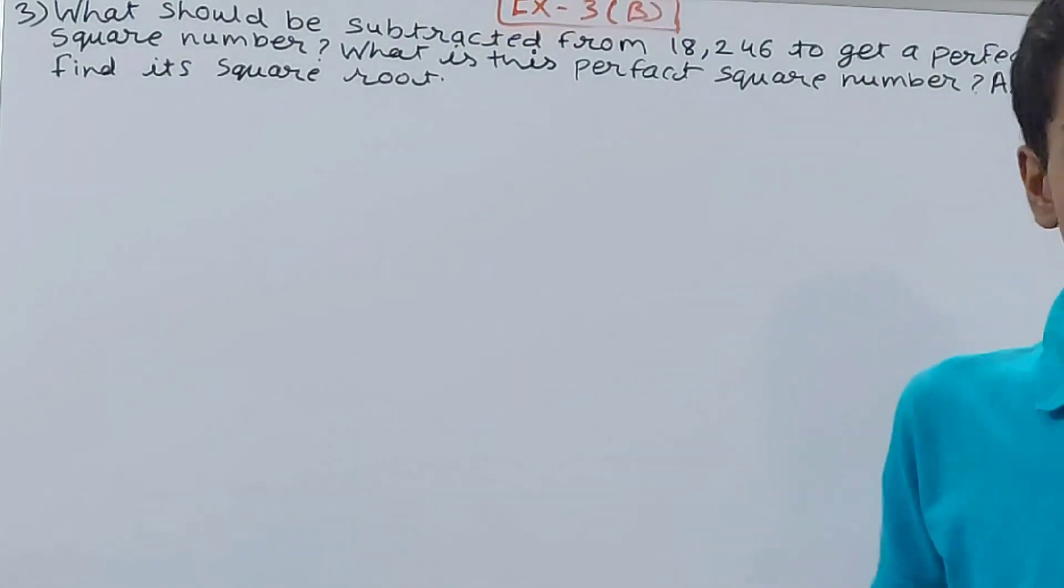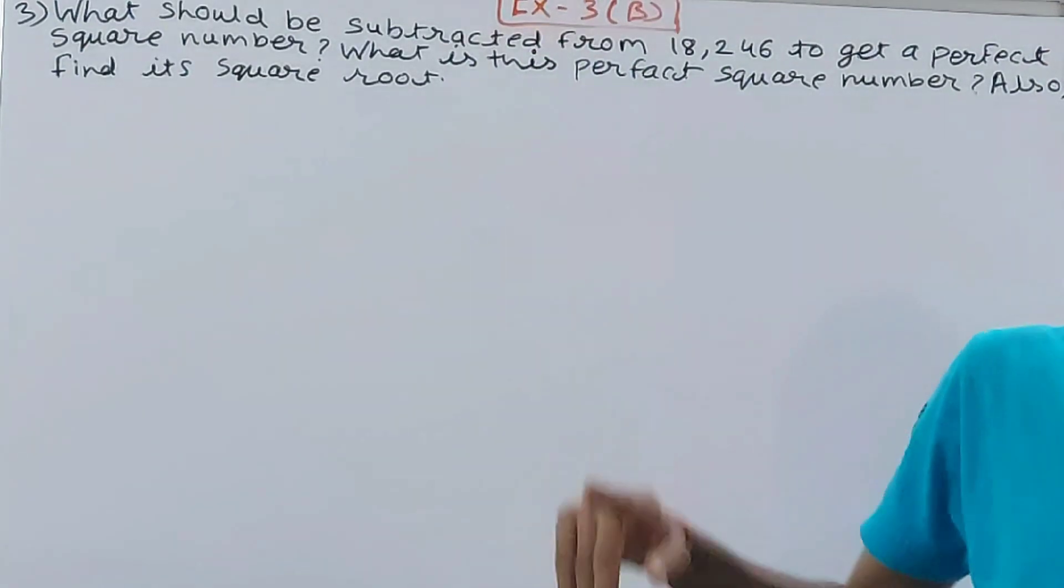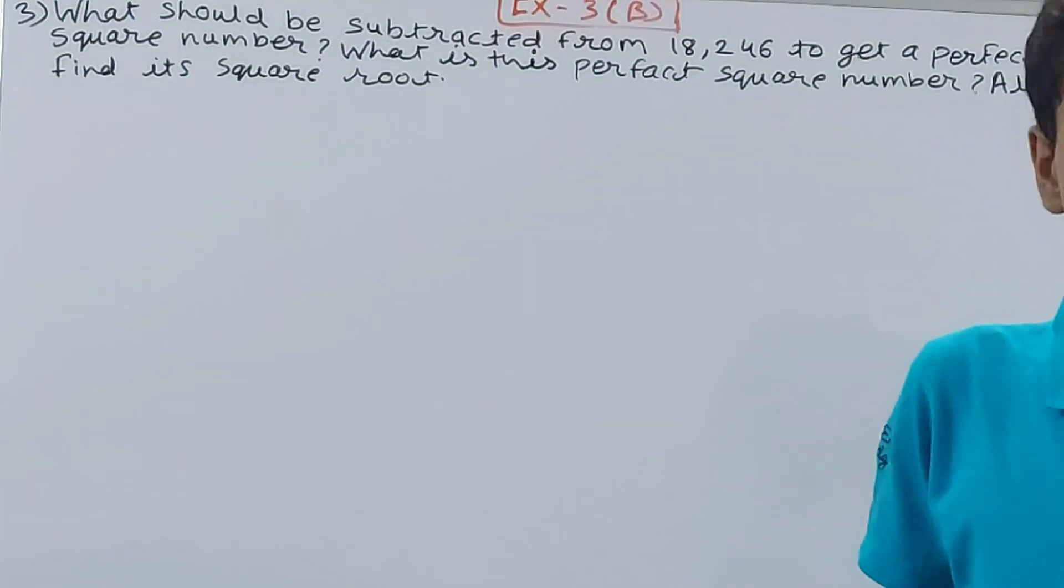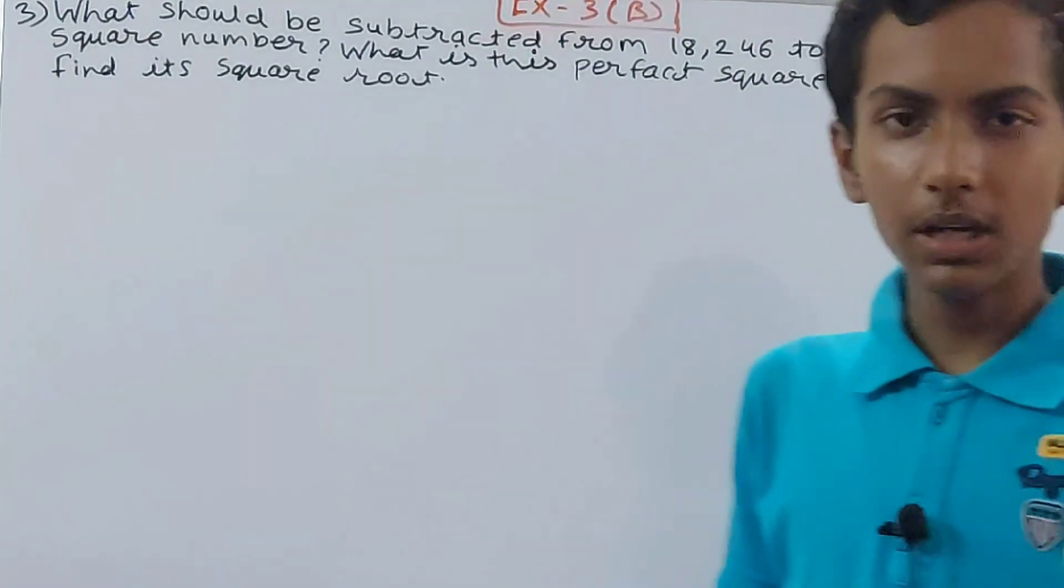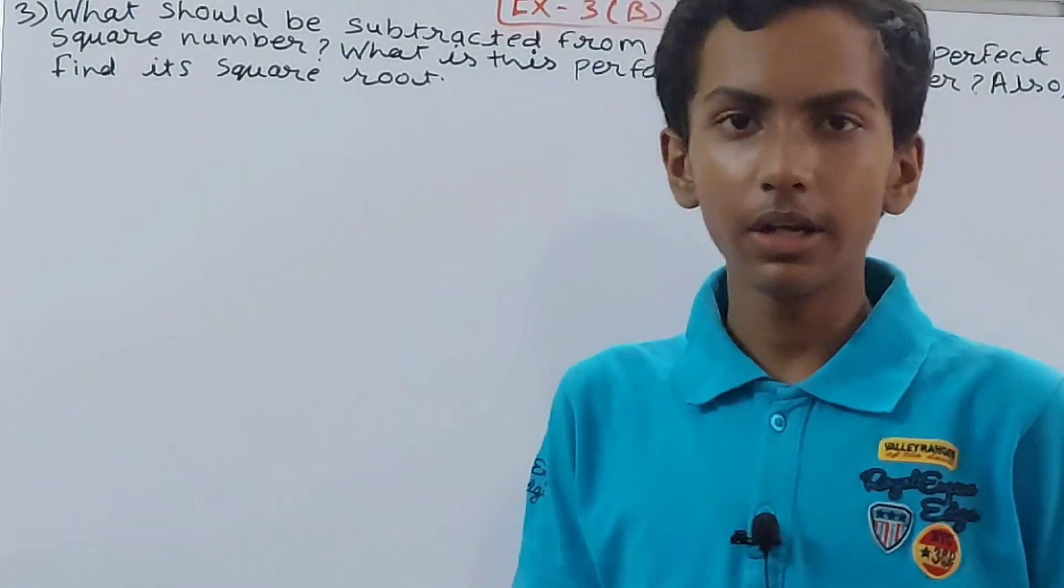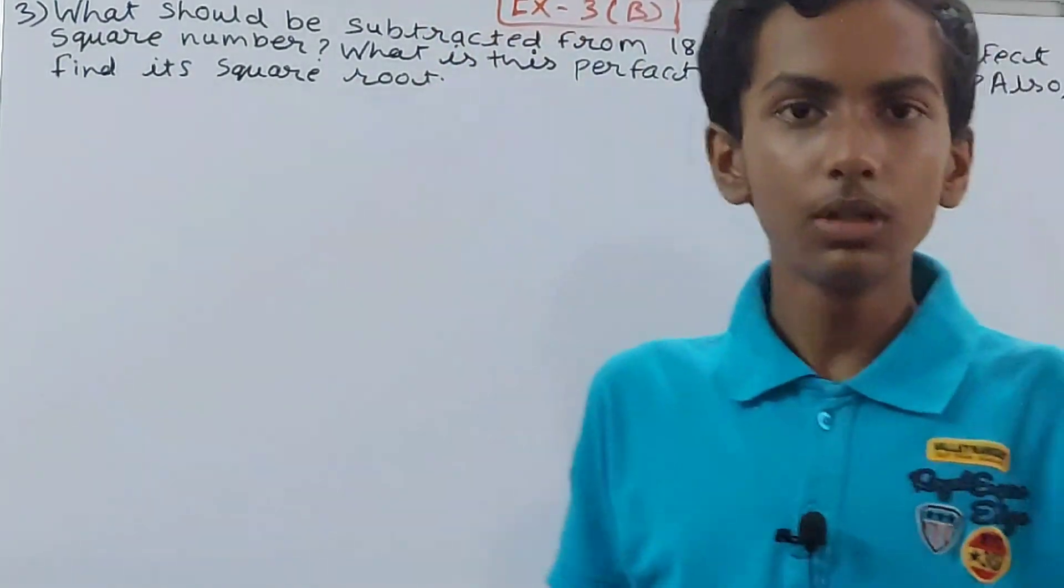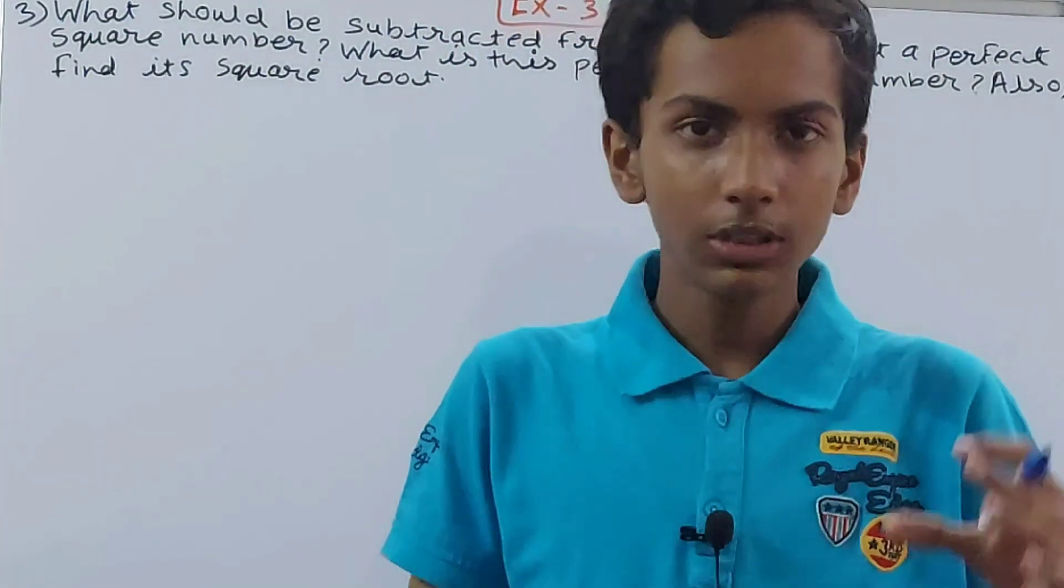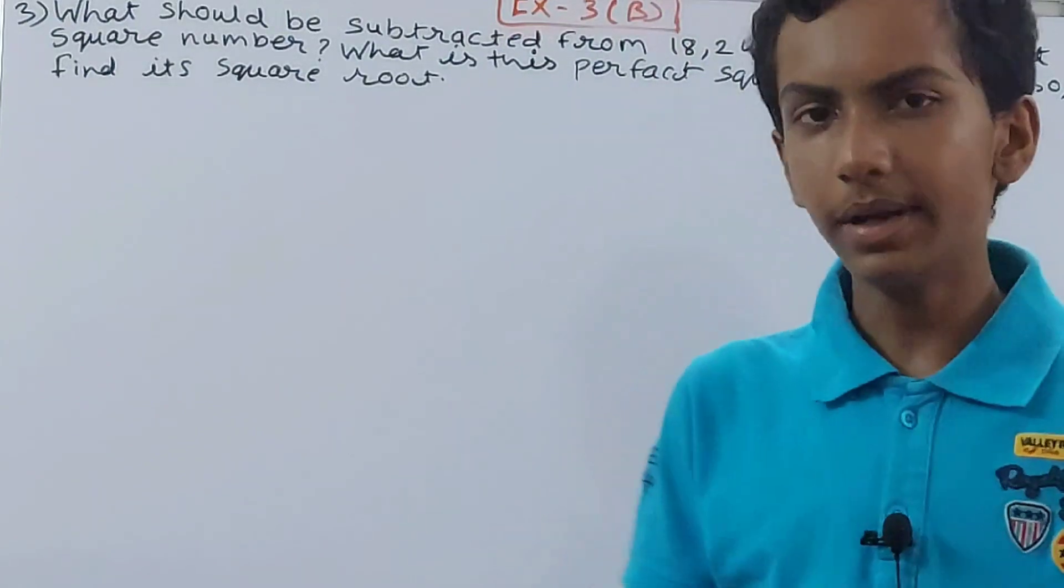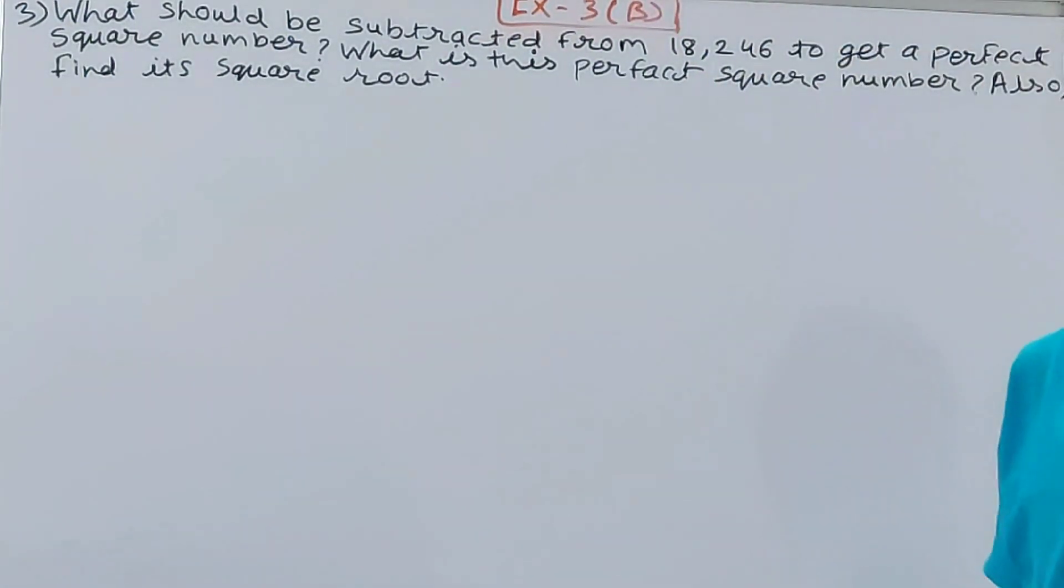Just do the long division method for the number given, 18,246. First step: whatever remainder you get—we have done the long division method and all the time we got zero in the remainder. But when the number is not a perfect square, I told you, then the number will have something or the other in the remainder. It will not have zero.